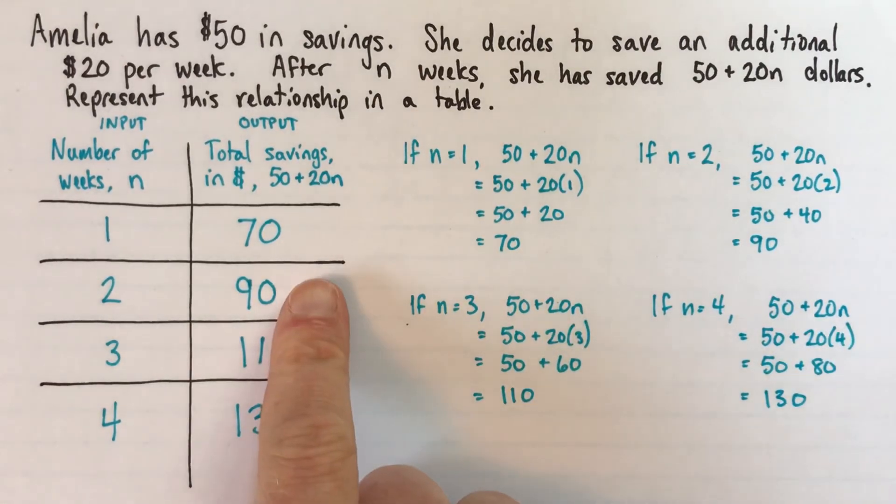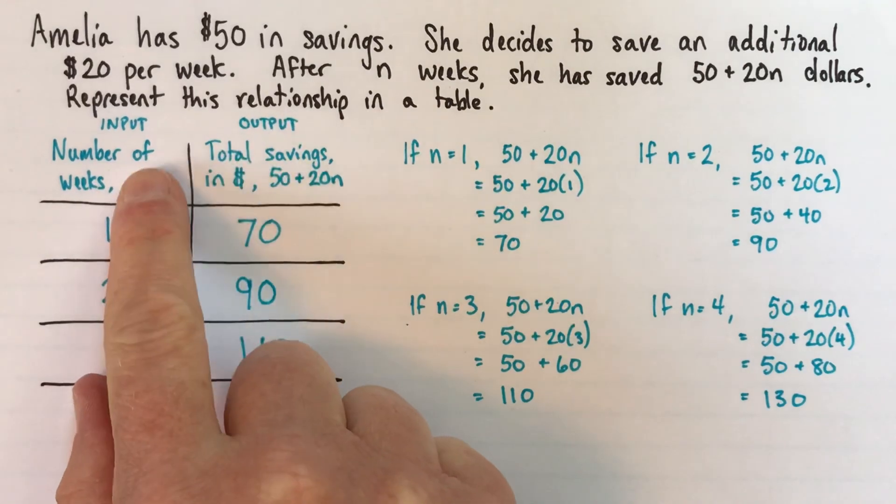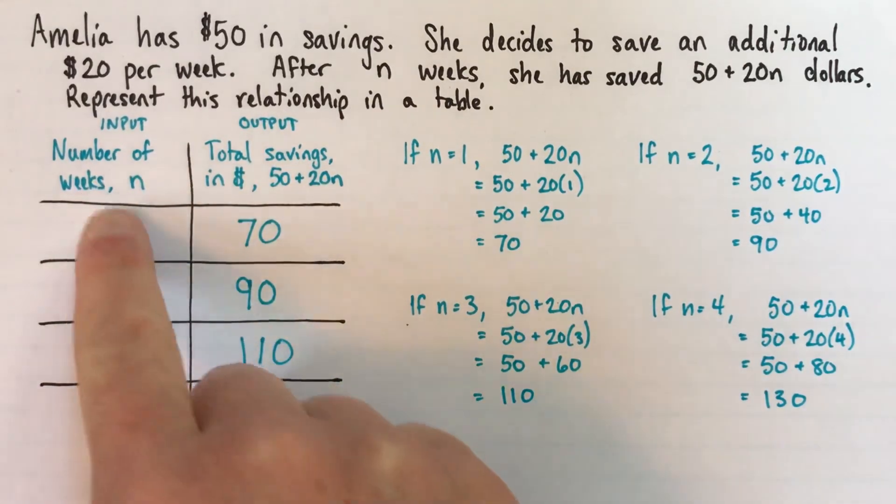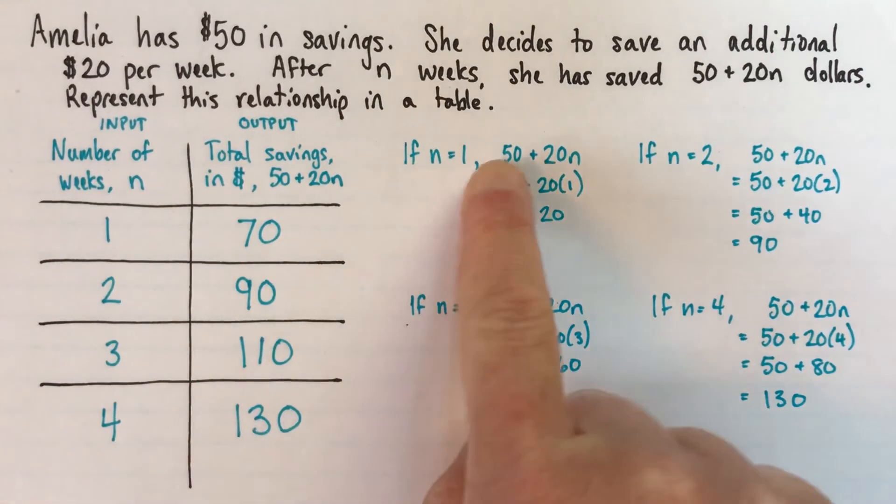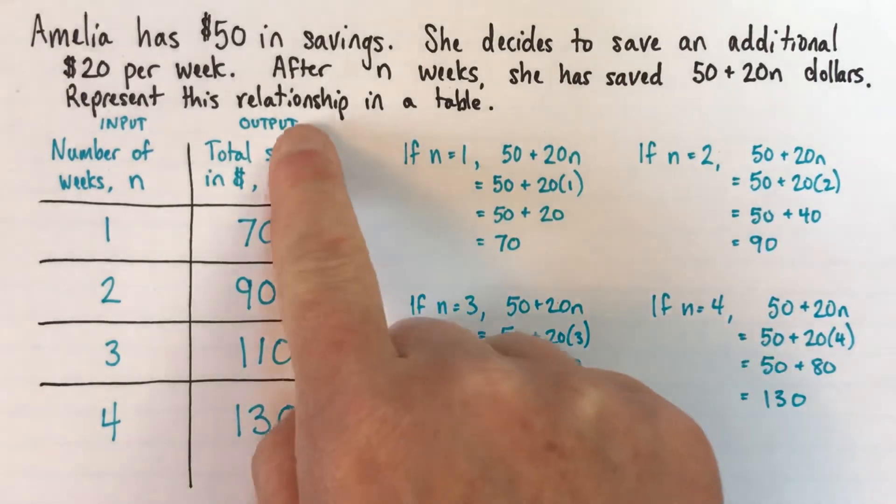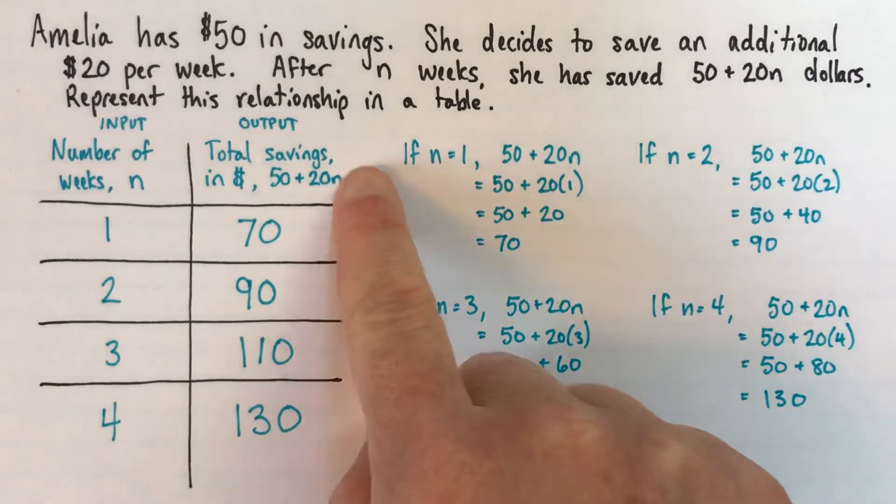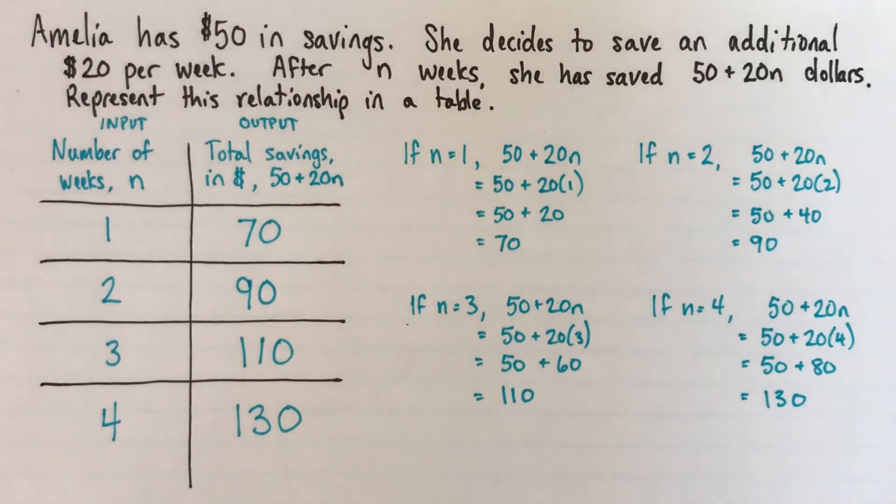Okay, so to make a table, write titles, that's super important. Put the input on the left, choose values for your input, and then substitute those values into your expression to find the values for the output, and then double check with patterns. Good luck.